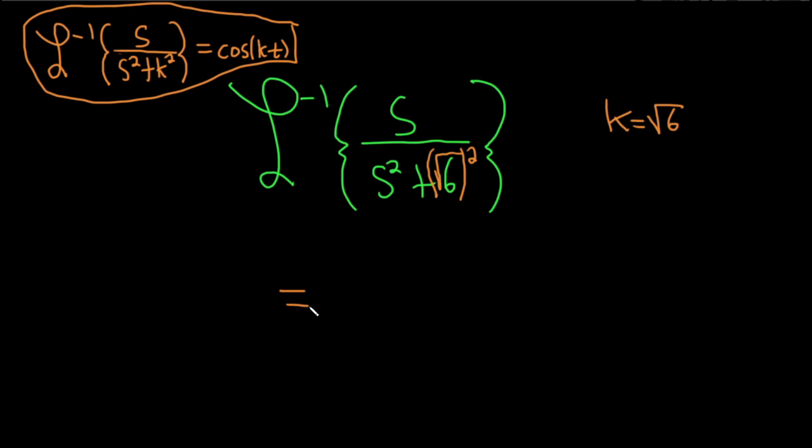So this is equal to the cosine, just directly applying the formula, cosine of the square root of 6 times t.